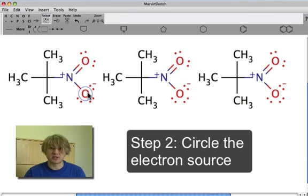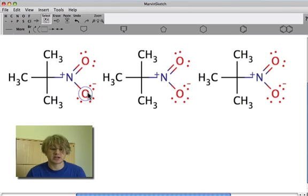The second step is to circle what is actually going to move. The way we do this in Ace Organic is to hover your mouse over the atom that contains these pushable electrons.